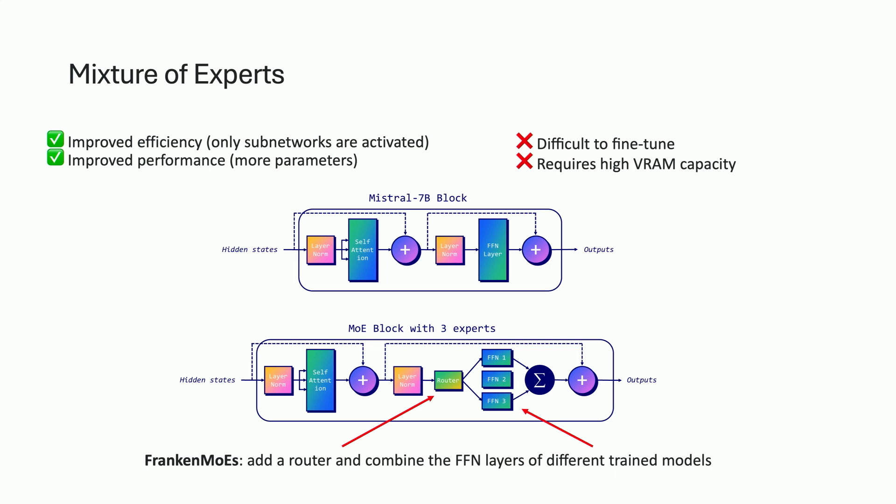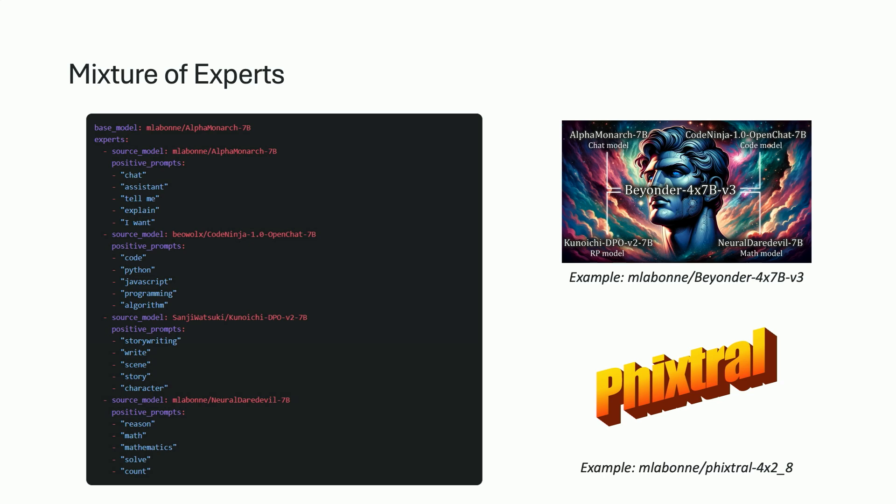The last technique I want to mention is called Mixture of Experts. In traditional Mixture of Experts, you pre-train a model with a router and different feed-forward network layers from scratch. But you can do something quite smart with merging — you extract the feed-forward network layers from different fine-tuned models and combine them together. We call this a Franken-MOE: you add a router, combine the FFN layers from different models, and this is how you create a mixture of experts. It works pretty well in practice.